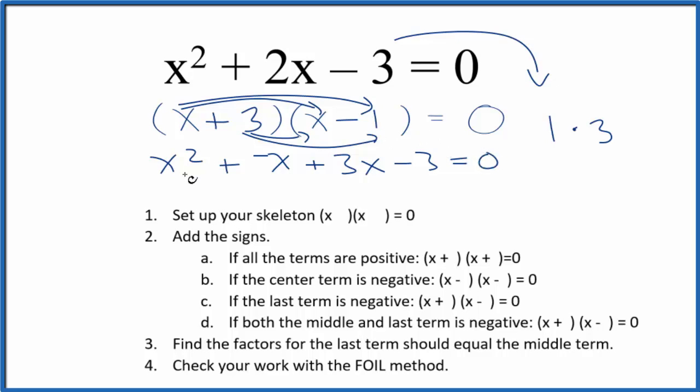That equals 0. So if we add these two together here, we get x squared plus 2x minus 3 equals 0. This is the same thing up here. So we know we did this correctly.